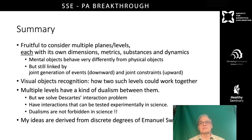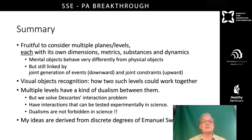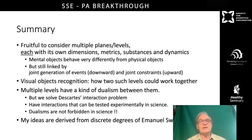To summarize, it's fruitful to consider multiple planes or levels, each with its own dimensions, metric substances, etc. Mental objects are now able to behave very differently from physical objects, but they're still linked. Events are generated downwards and constraints on the results of those events work upwards. This idea of visual object recognition shows how two such levels could work together and be part of science. We can have multiple levels, each with a kind of dualism between them. But this is not the dreaded dualism of Descartes, because we've solved Descartes' interaction problem — interactions can be tested experimentally in psychological sciences, so dualisms are not forbidden in science. My ideas are derived from Emanuel Swedenborg's theory of discrete degrees, so he's the person to read if you want more information on this kind of theory.